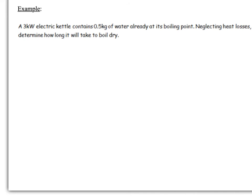We've got a 3 kilowatt electric kettle with half a kilogram of water already at its boiling point. So we've got it at a fixed temperature, one of the conditions we need to apply to the latent heat of vaporization. Neglecting heat losses, determine how long it will take to boil dry. Let's first work out some key information.